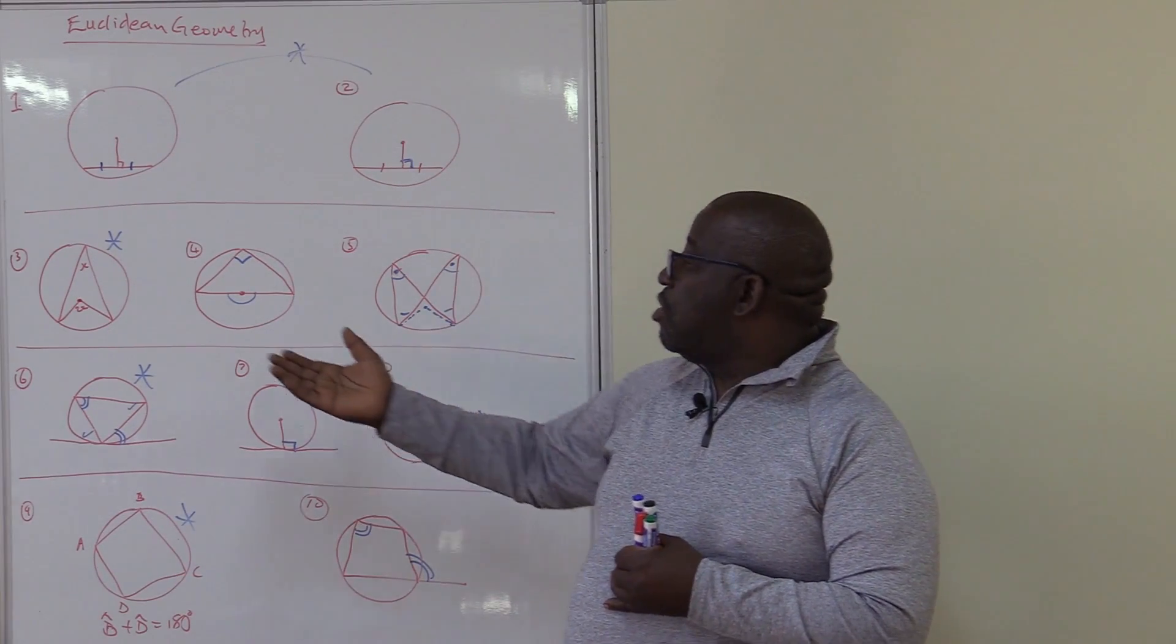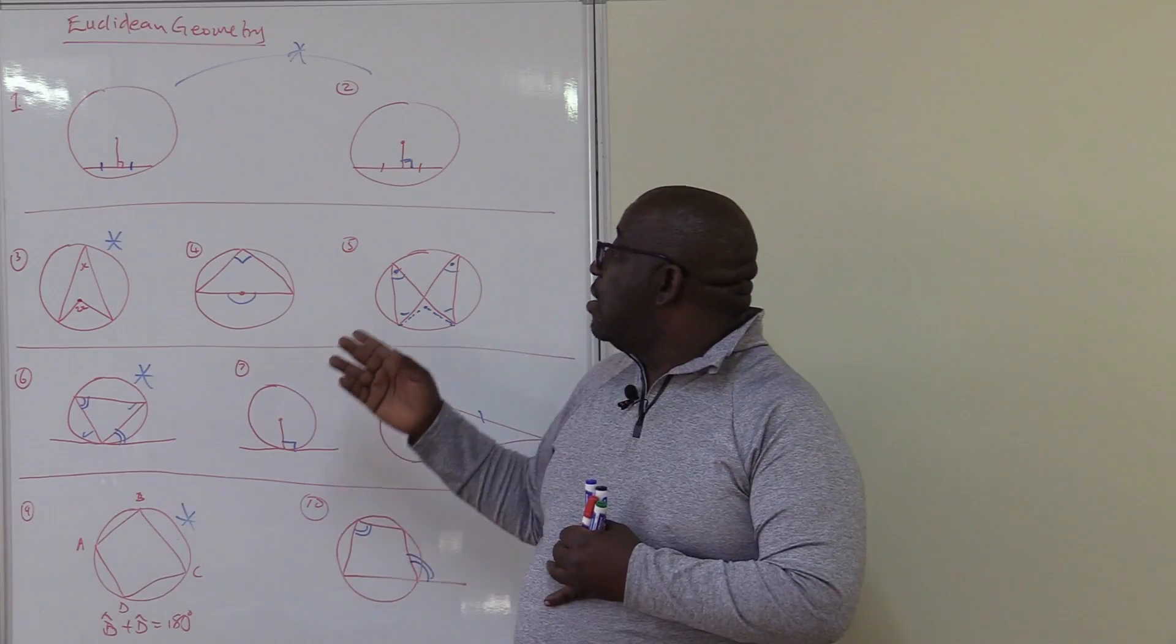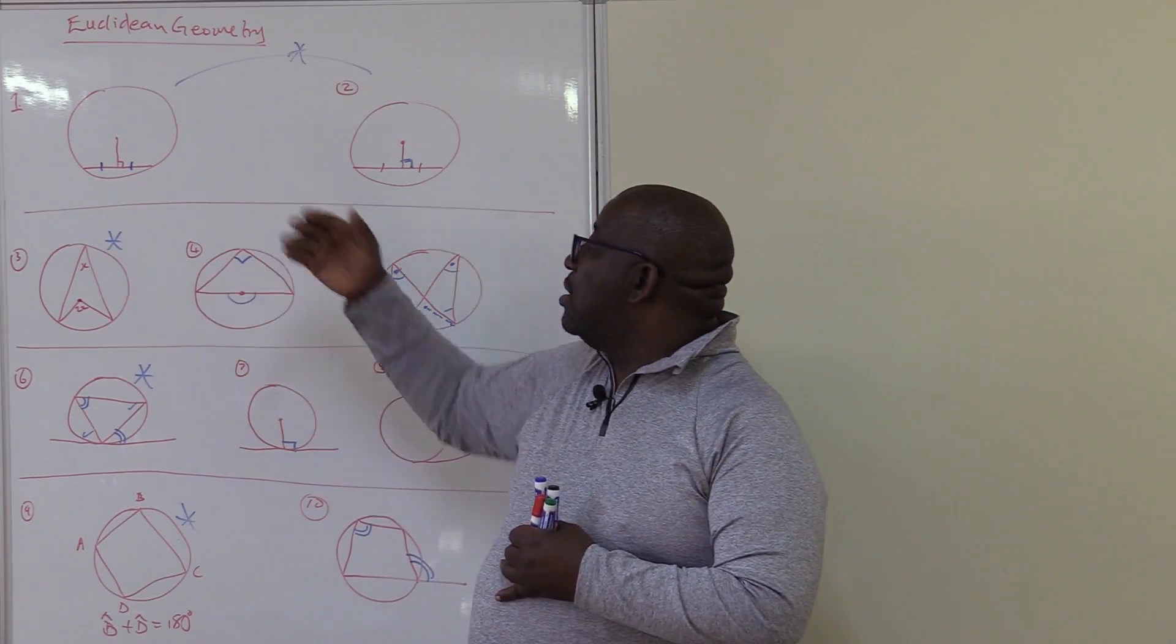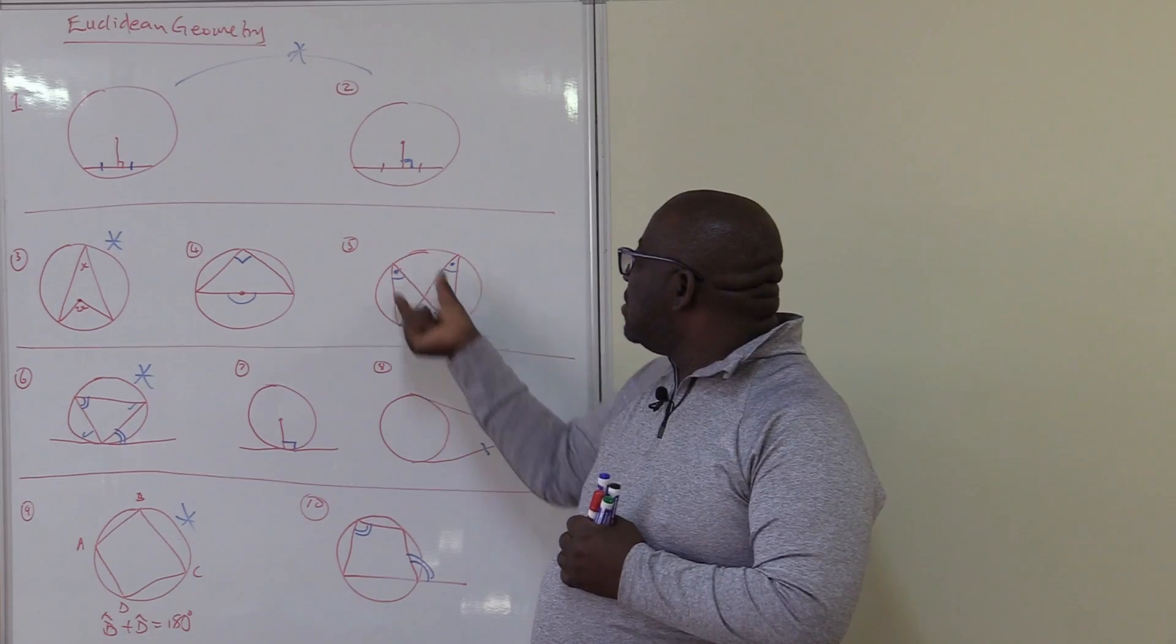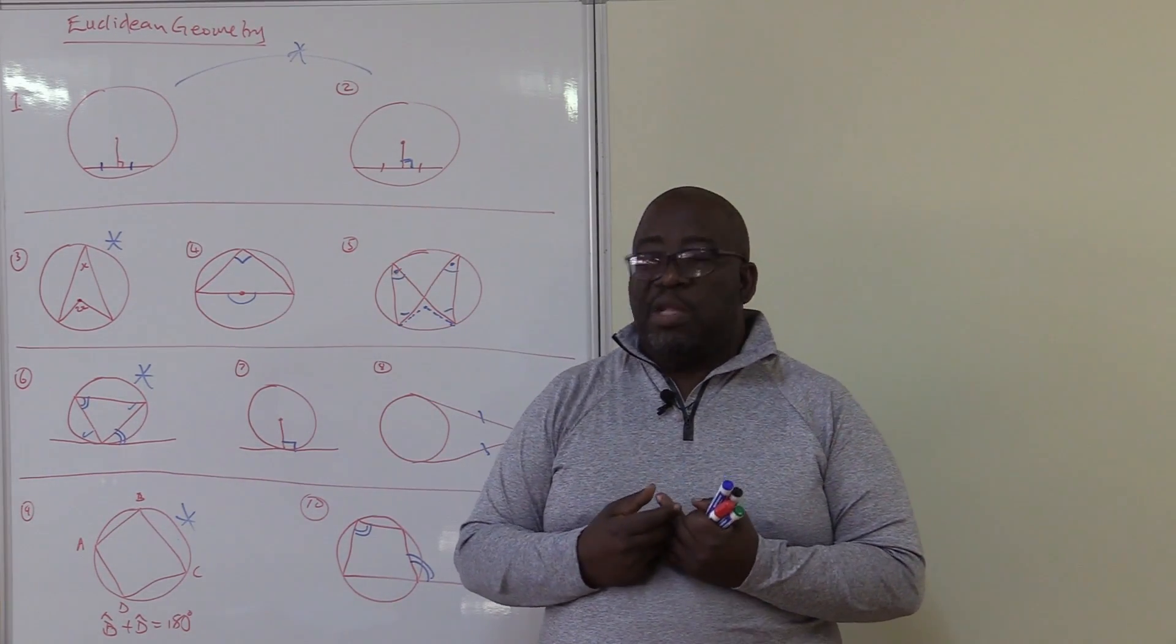If they talk about a center, think of the center theorem. The angle of the center is twice the angle of the circumference. Angle subtended by the diameter. Diameter passes through the center. It is equal to 90 degrees. Angles in the same segment are equal. As long as they are subtended by the same arc or chord they will be equal.